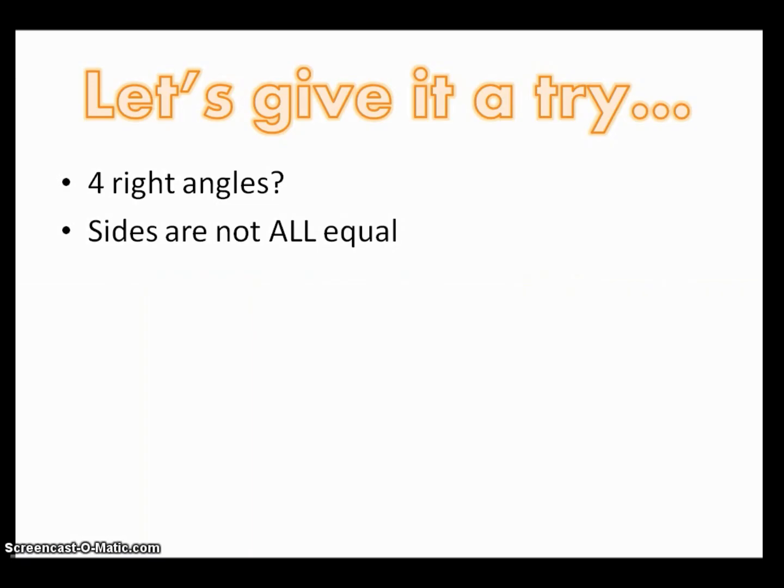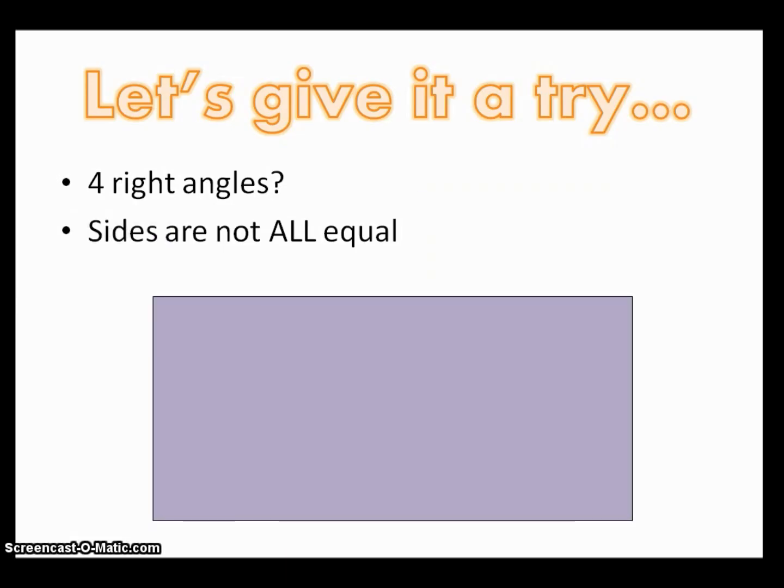Alright, so what if it has four right angles, but the sides are not all equal? And that would be a rectangle.